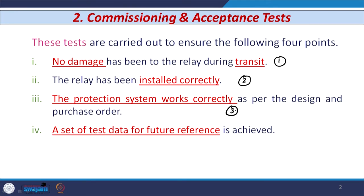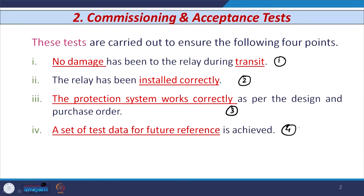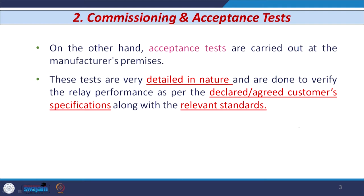The third point is that the protection system should work perfectly as per design specification and the purchase order. All the functions available or mentioned in the protective device need to be tested, and a satisfactory testing certificate is also taken from the manufacturer. The last reason is that if we need to generate some data for future work — when we test the protective device on certain functions, we get data that can be used for further work in the future.